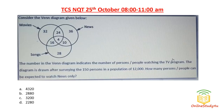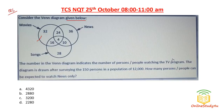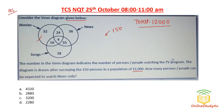Question number one — many people will get confused here, but this is a simple Venn diagram question which you can easily solve. Consider the Venn diagram given below. The numbers in the Venn diagram indicate the number of people watching a TV program. The diagram is drawn after surveying 150 persons in a population of 12,000. So the total population is 12,000, but the diagram was drawn after surveying 150 people.